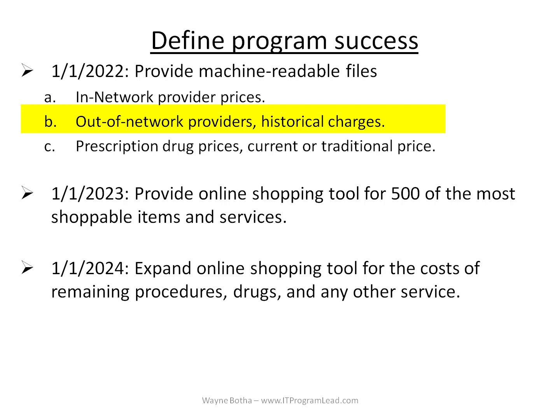Part B is around out-of-network provider prices, or alternatively what the provider charged in the past if the price isn't available. Here are questions you must ask regarding this point. For out-of-network providers, what questions must we explore to get consensus on the right price? Where will the price come from? Is any validation or confirmation needed that we have the correct price if there are any discrepancies?